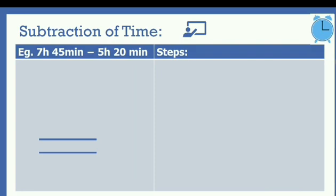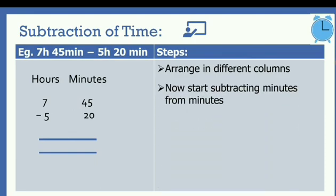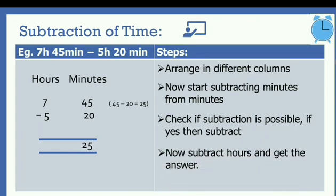Now we are going to look at subtraction of time. For subtraction also, first arrange in different columns of hours and minutes: 7 hours 45 minutes minus 5 hours 20 minutes. Start subtracting minutes from minutes — from 45, subtract 20. Is it possible? Yes. So we subtract and get 25. Now subtract hours: can we subtract 5 from 7? Yes. After subtracting we get 2. The final answer is 2 hours 25 minutes.